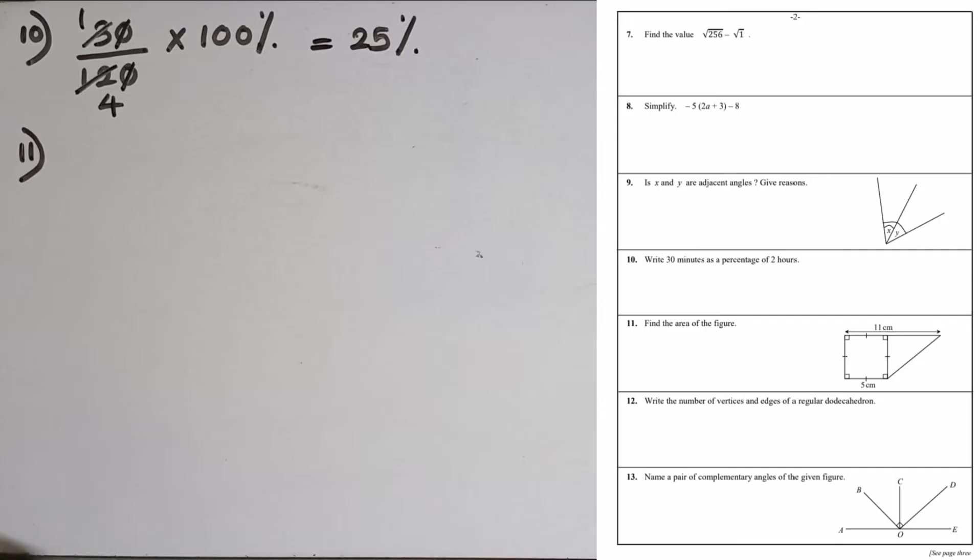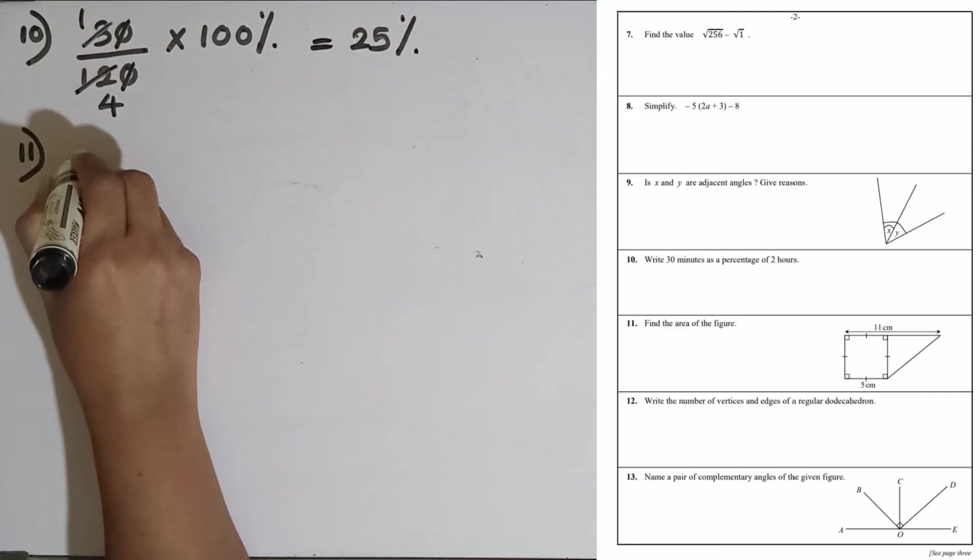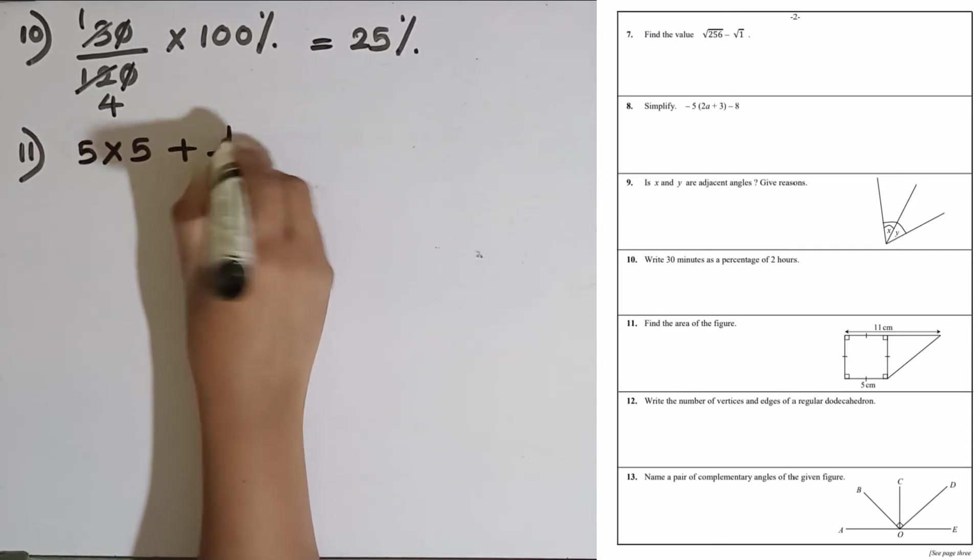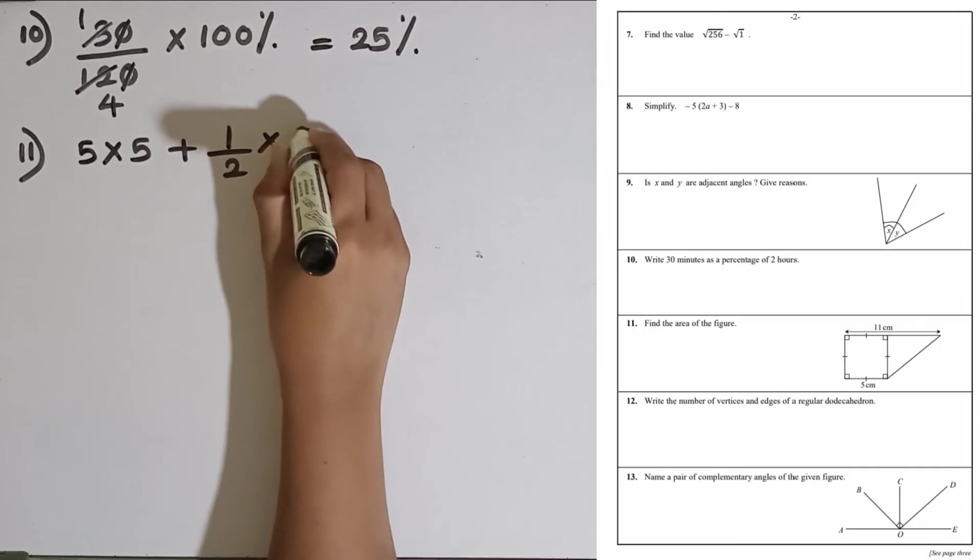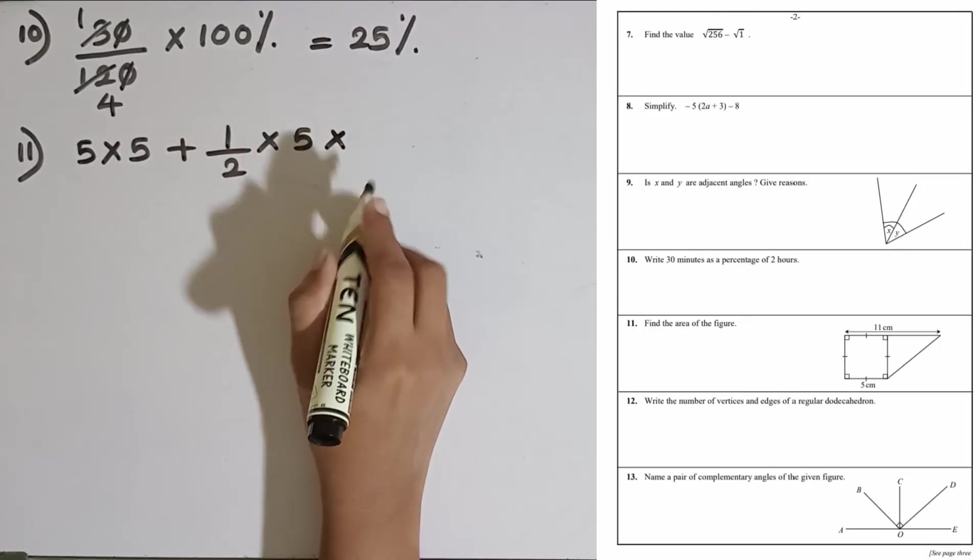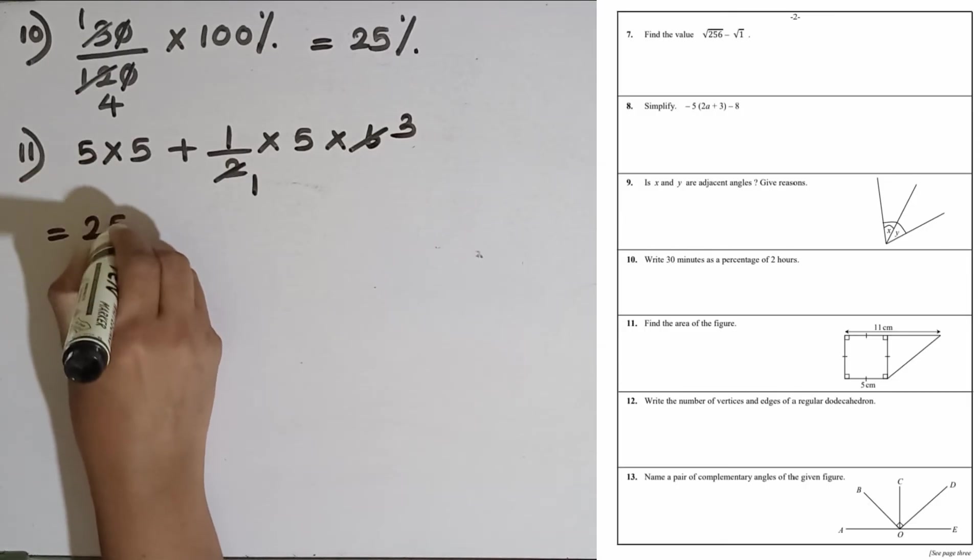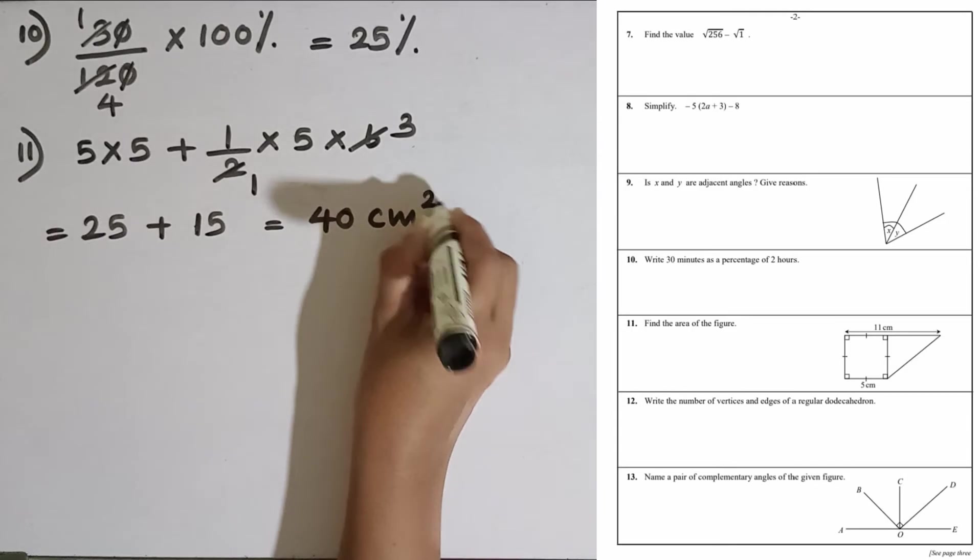Question number 11: Find the area of the figure. This figure is separated into a square and one triangle. So we can find the area by finding the area of the two separate figures. The area of the square is equal to 5 multiplied by 5 plus area of the triangle, half into what is the perpendicular height? Here we can take the perpendicular height as 5 centimeters, then the base, 11 minus 5 is 6. 5 times 5 is 25 plus 15, the answer is 40 square centimeters.